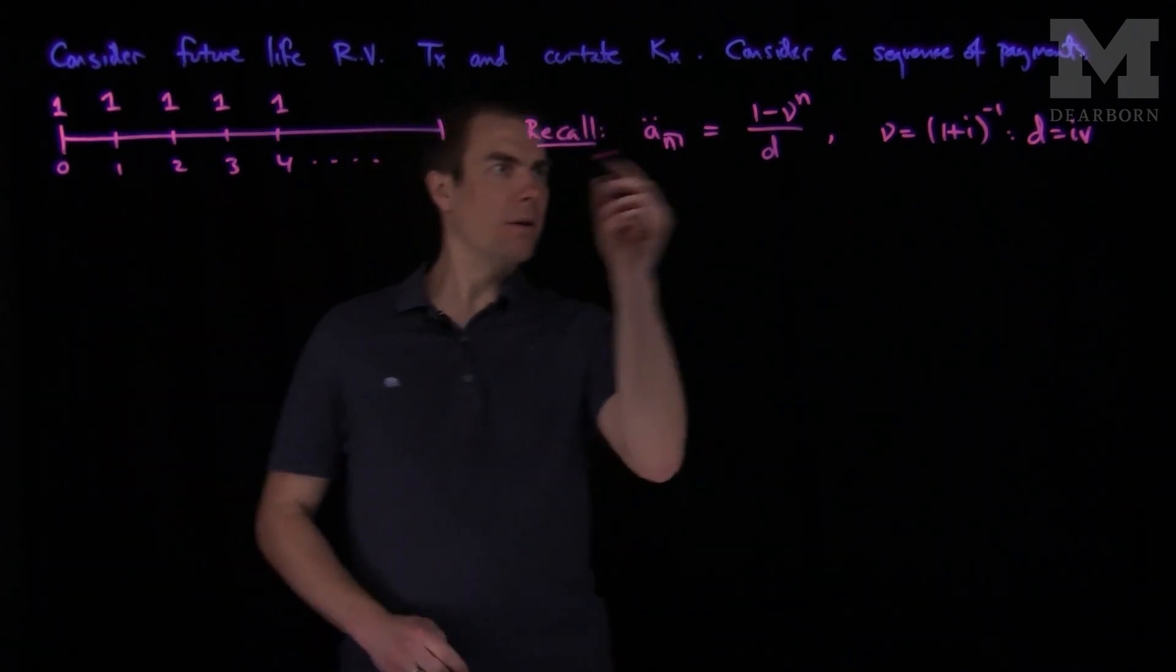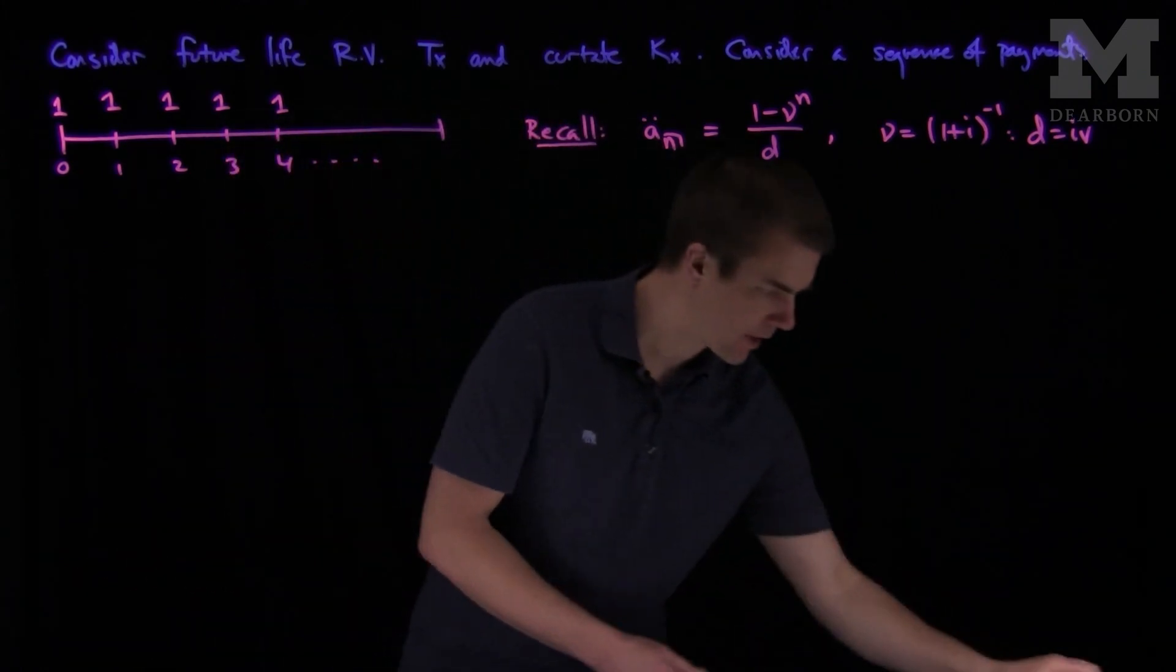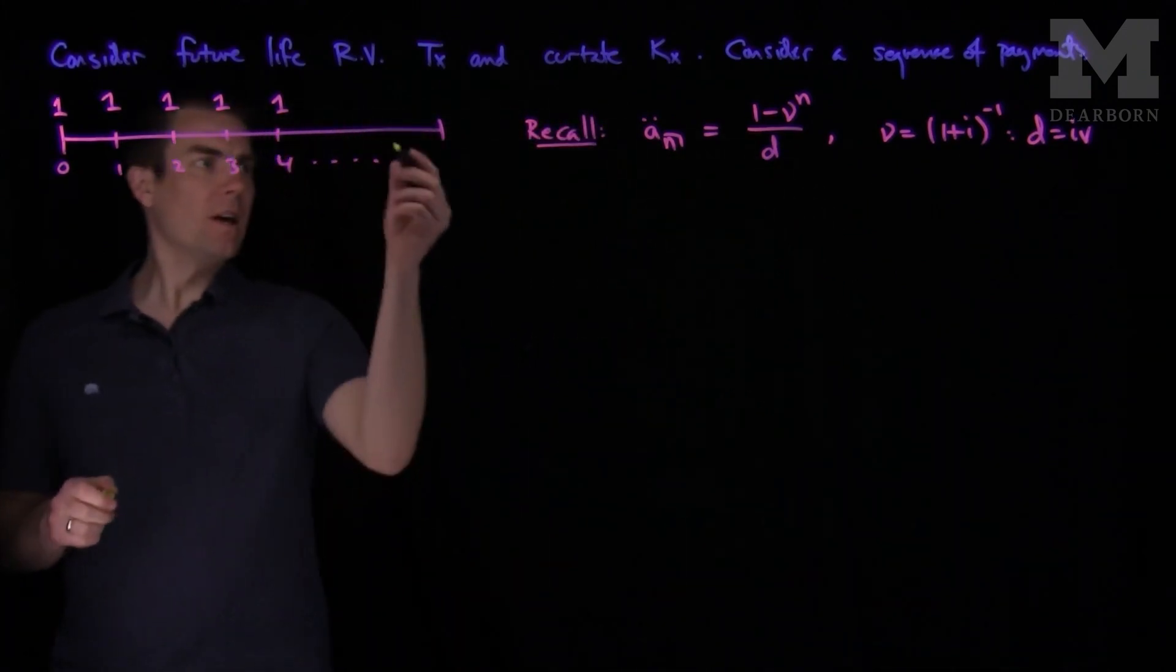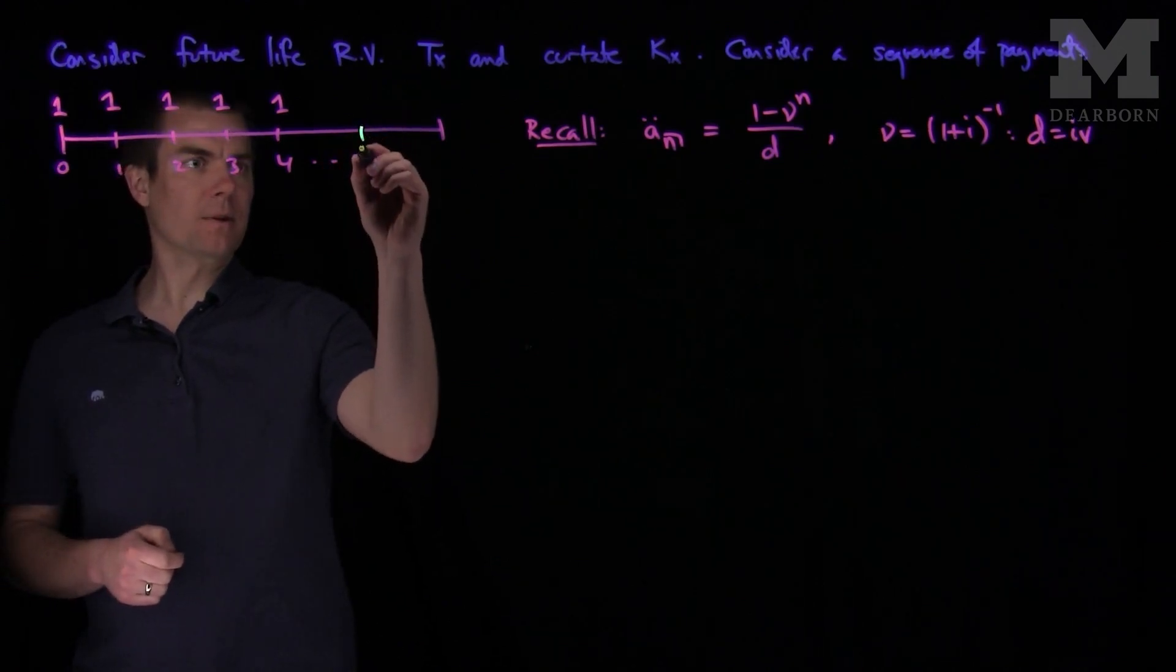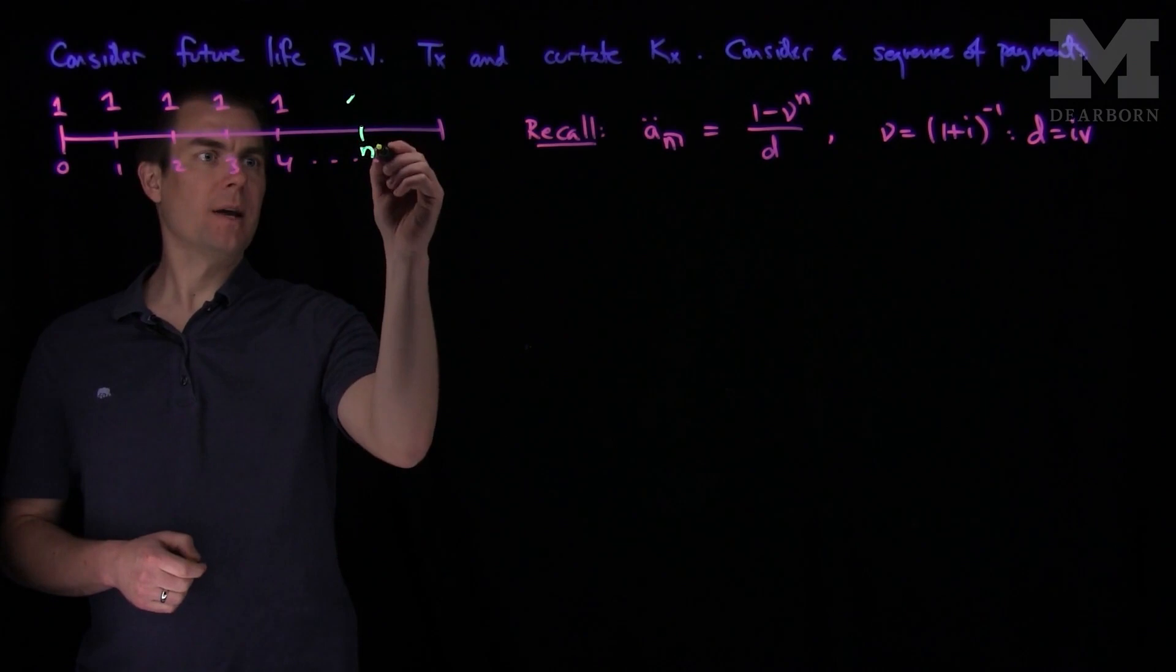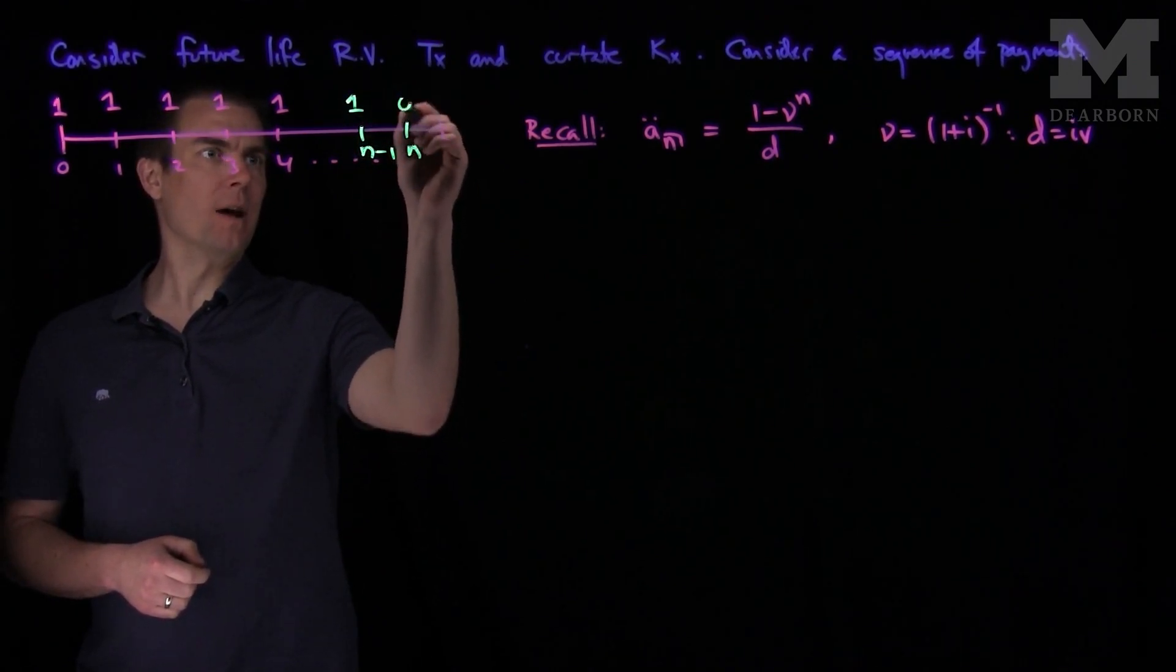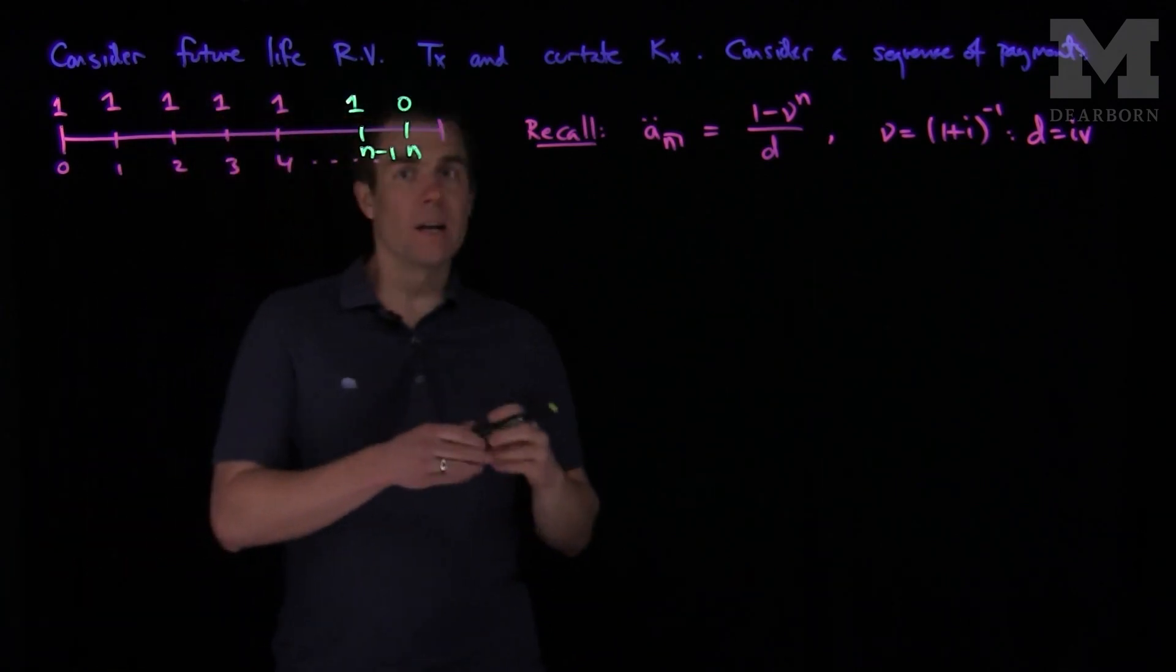And so this is the present value of this stream of payments. Because if we consider this as a regular discrete random variable, if we go up to level n, so if we go up to time n over here, we get a payment, that's the last payment. So we get a payment at n minus 1 of 1, and at n we would get nothing. Then what would this be?